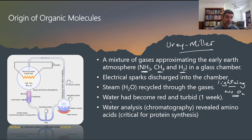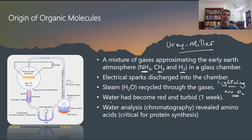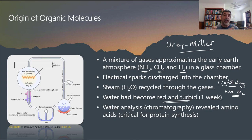Miller could get an idea of what was actually being produced as a result of this reaction. This is around about the early 1950s. What Miller noticed was that the water had actually started to change color. That turbidity noticed in the simulated ocean was actually the presence of particular types of amino acids.